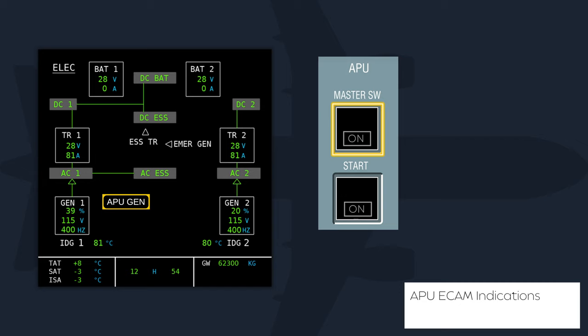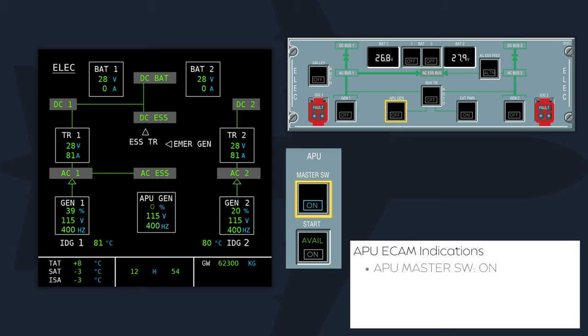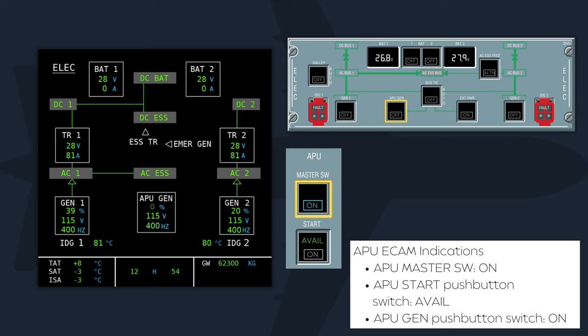The ECAM ELEC page will display the label APU generator in white when the APU master switch is off. With the APU master switch on and the APU generator push button selected off, the label APU generator will appear in amber and OFF will appear in white. When the APU is running normally and the push button is on, the ECAM ELEC page displays APU generator in white, changing to amber if APU generator load, voltage, or frequency are outside set limits. The indications for load, voltage, and frequency are normally green, changing to amber if their limit is exceeded.